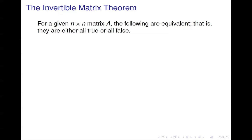The main part of Section 2.3 is the Invertible Matrix Theorem. This theorem ties together everything we've done so far in the course — everything from Chapter 1 and up through Chapter 2.